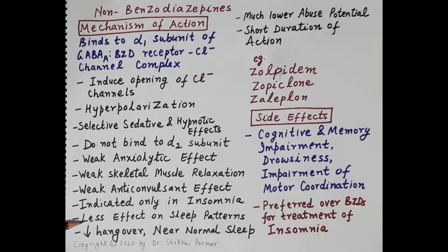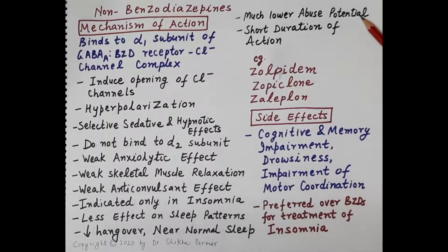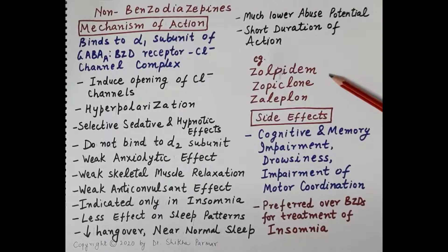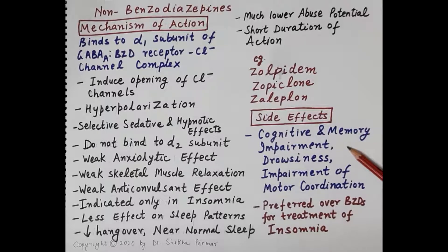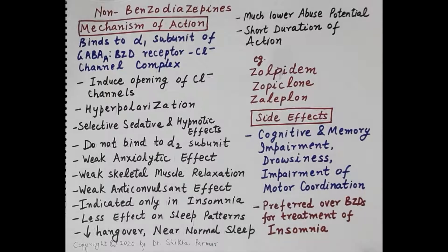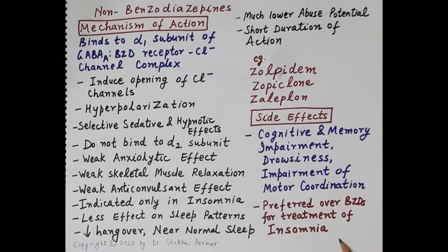Non-benzodiazepines are preferred over other categories for insomnia because they produce selective sedative and hypnotic effects with less distortion of sleep pattern, sleep more similar to normal sleep, reduced hangover compared to barbiturates, much lower abuse potential, and shorter duration of action. Examples include zolpidem, zopiclone, and zaleplon. Side effects include cognitive and memory impairment, drowsiness, and impairment of motor coordination. This concludes the pharmacology of sedative hypnotics.